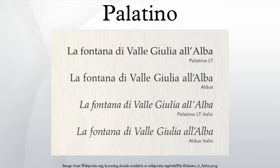TeX Gyre Pagella is released in formats compatible with LaTeX as well as modern OpenType compatible systems, and is part of the TeX Gyre project to make updated, expanded OpenType versions of URW's open source fonts. Microsoft distributes a similar typeface, Book Antiqua, which is considered by Zapf to be an imitation.